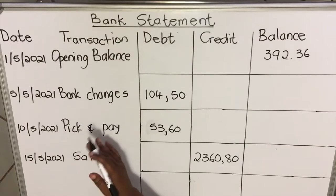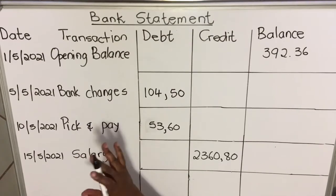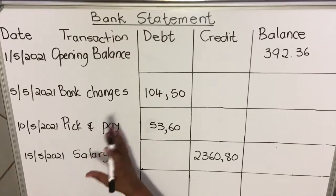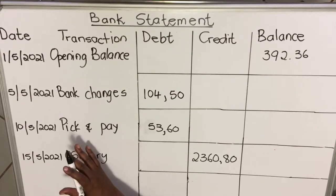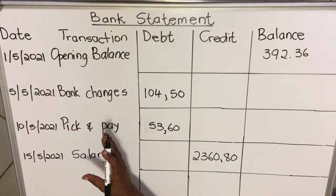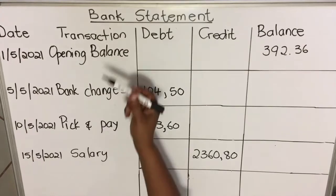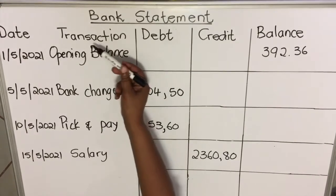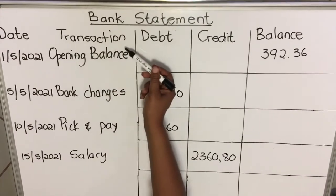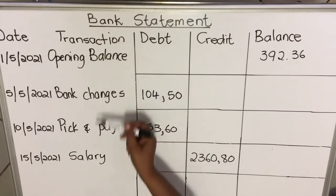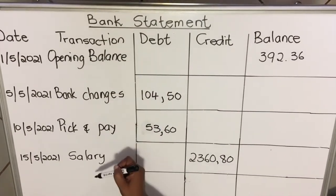The transaction is what has happened — money going into the account or going out of the account. Then the transaction description tells you what happened.